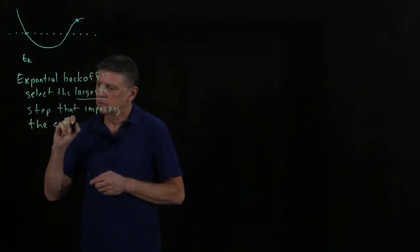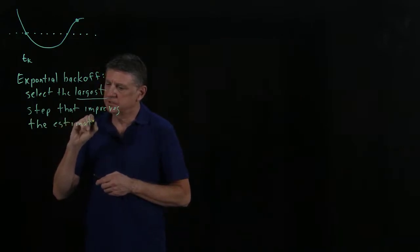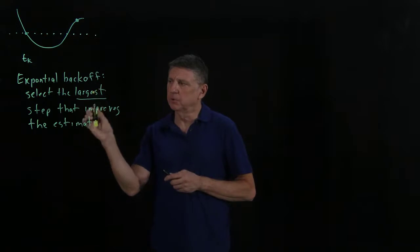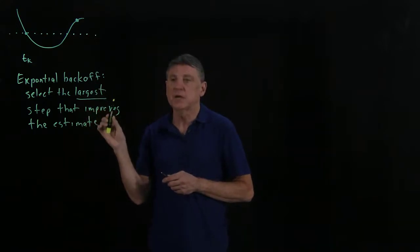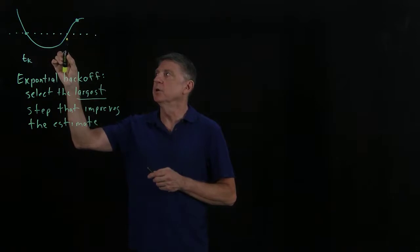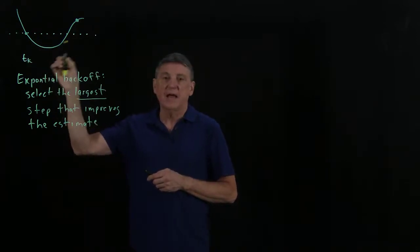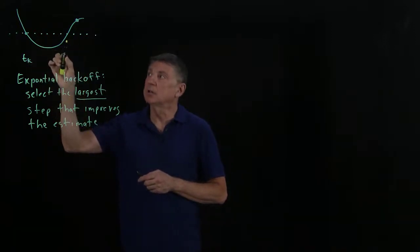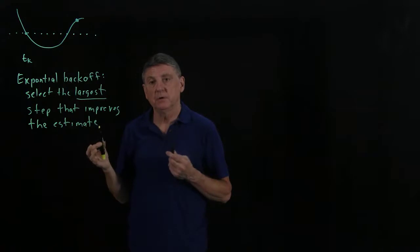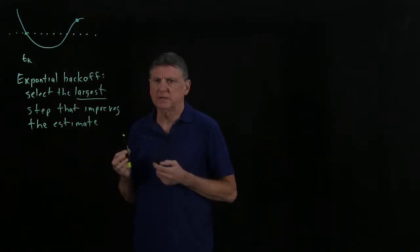In previous sessions, we were concerned about that largest property, because taking the largest, in this case, would take us to the opposite side of that minimizer. And so we would begin an oscillation back and forth, which might be good, might be bad, but in general, it's a little bit concerning.